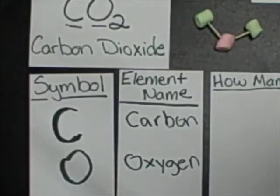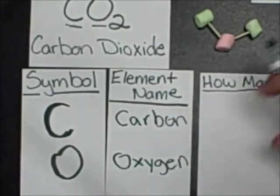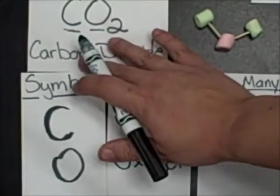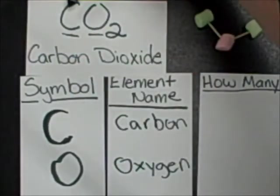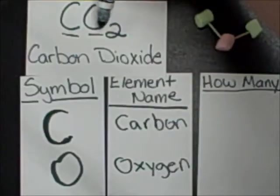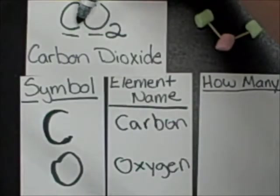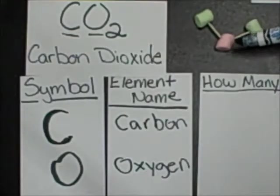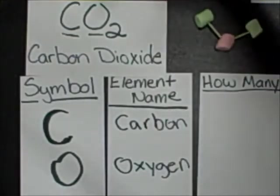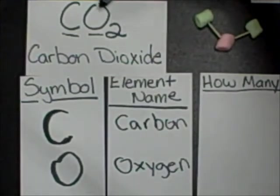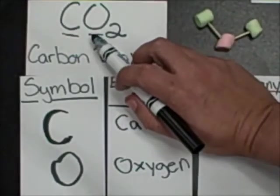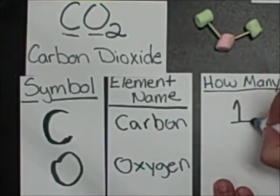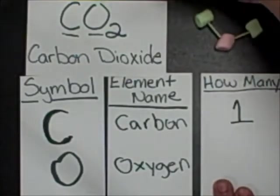So now we look at how many. And the way to do that is we go back up to our molecular formula here. And we look to see if there's numbers beside our letters. If there's no number, then you only have one. If there's a number, then that's how many of that particular element we have. So we have a two here, so that means I have two oxygens.